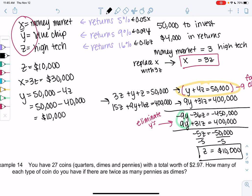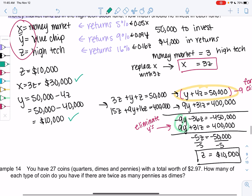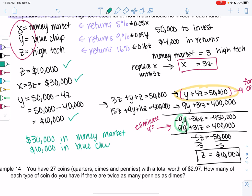So we'll put 10,000 in the money market. Sorry, 30,000 in the money market, 10,000 in the blue chip, and 10,000 in the high-tech. And we've solved it. Notice they add up to 50,000. That was our original investment. And you could calculate the interest, the percent, if you wanted to check that it adds up to 4,000.